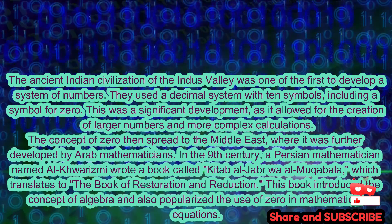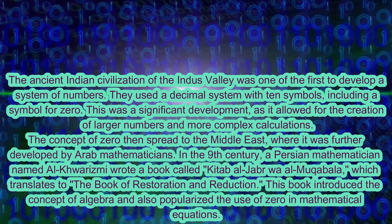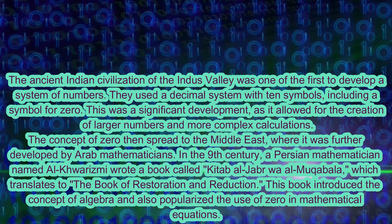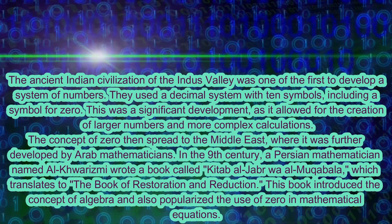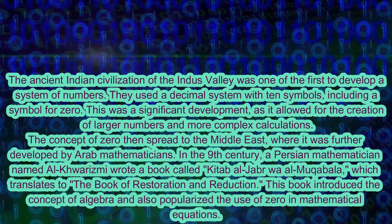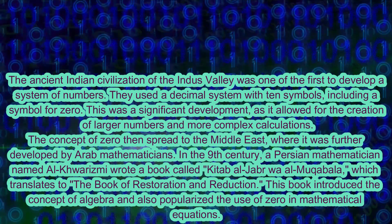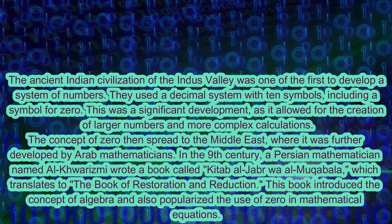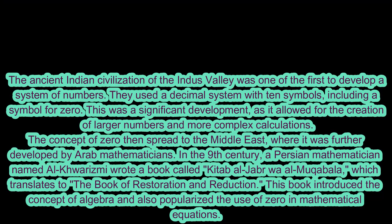The concept of zero then spread to the Middle East, where it was further developed by Arab mathematicians. In the 9th century, a Persian mathematician named Al-Khwarizmi wrote a book called Kitab al-Jabr wa al-Makabala, which translates to The Book of Restoration and Reduction. This book introduced the concept of algebra and also popularized the use of zero in mathematical equations.